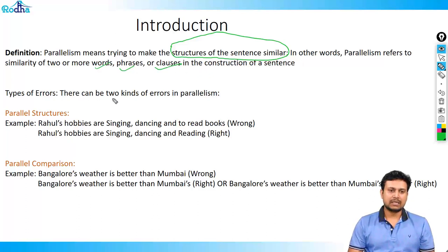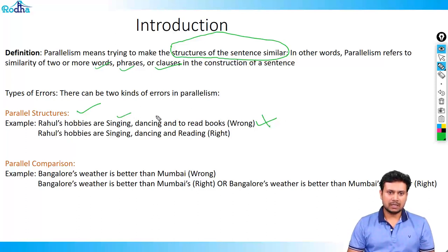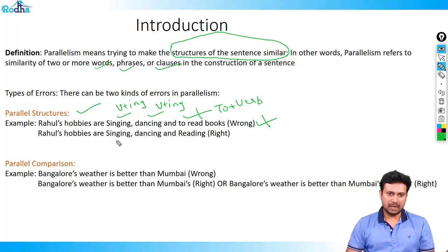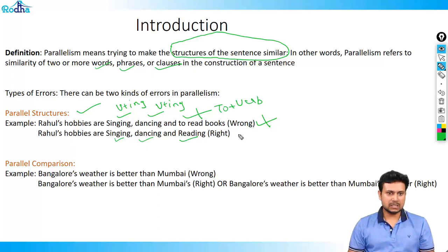Predominantly there can be two types of errors. The first is a parallel structure error. Let's look at a wrong statement: 'Rahul's hobbies are singing, dancing, and to read books.' Singing is verb+ing, dancing is verb+ing, but 'to read books' is in the infinitive form — that makes the sentence incorrect. The correct sentence will be: singing, dancing, and reading — all three elements parallel. This is what is called a parallel structure problem.